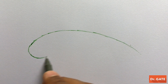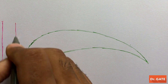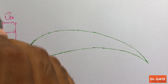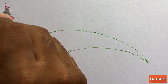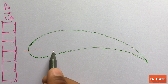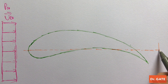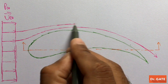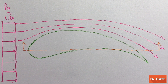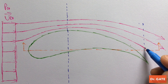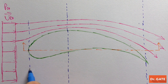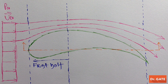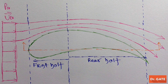Let's take a sectional view of an aerofoil. This is the ambient flow pattern with velocity u-infinity and ambient pressure p-infinity. For sake of simplicity, we are considering only the upper part of the aerofoil. The flow pattern above the aerofoil will be something like this. We are dividing this aerofoil into two parts: the front half and the rear half.